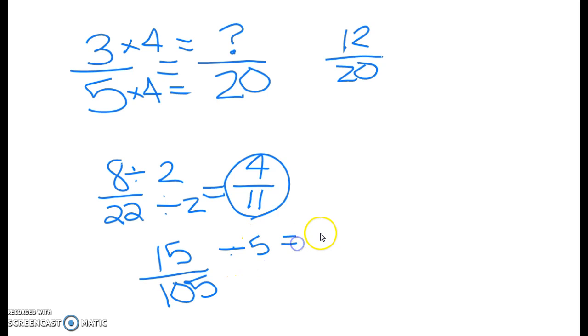15 divided by 5 is 3. 105 divided by 5 is 21. In this case, 3 over 21, they both still have the common factor of 3. So we can divide one step further. 3 divided by 3 is 1. 21 divided by 3 is 7.